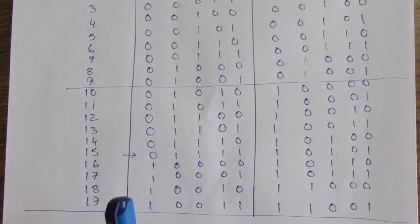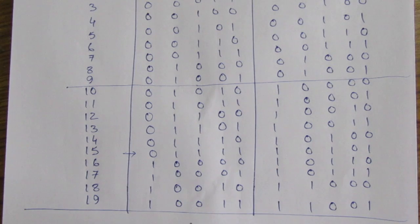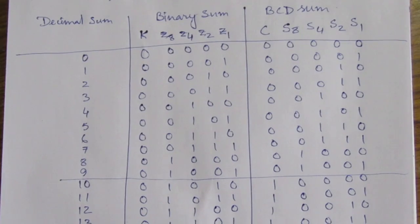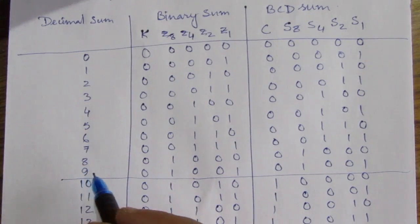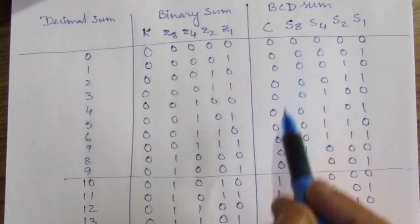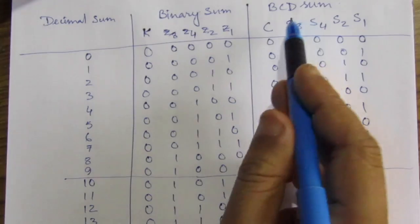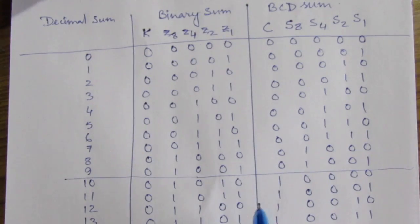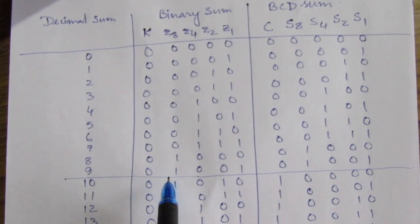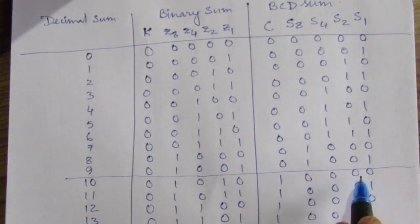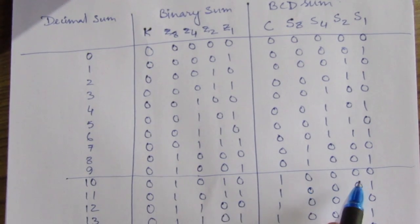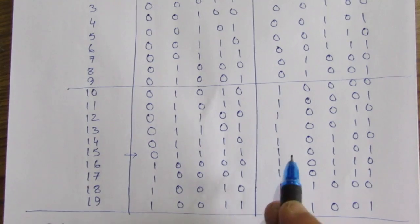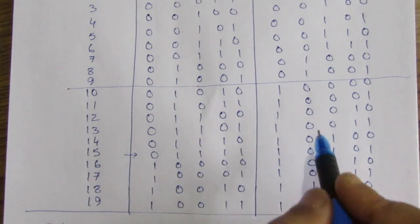This is the derivation table of binary sum and BCD sum. In this table, we can see that from 0 to 9, the binary sum and the BCD sum are the same. But after 9, the binary sum and the BCD sum are different. So how to convert this binary sum into its BCD sum? We can see here two cases.